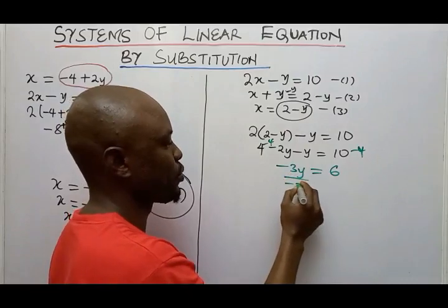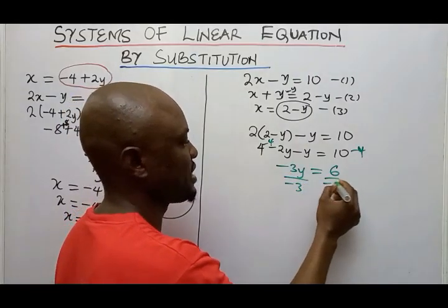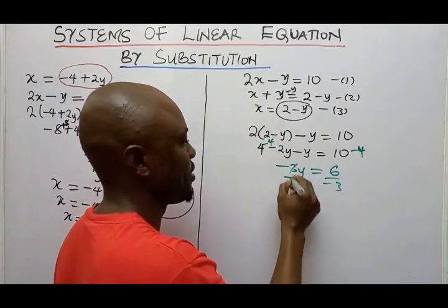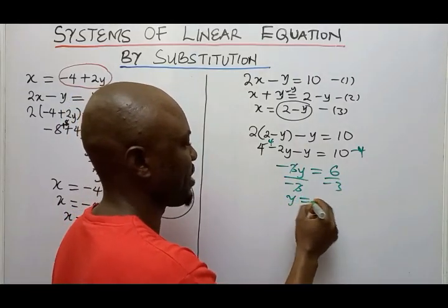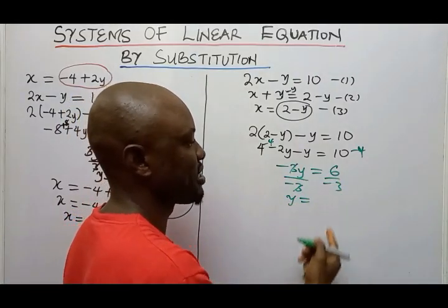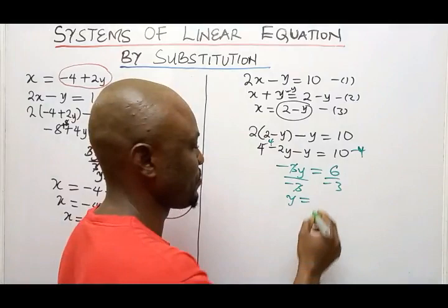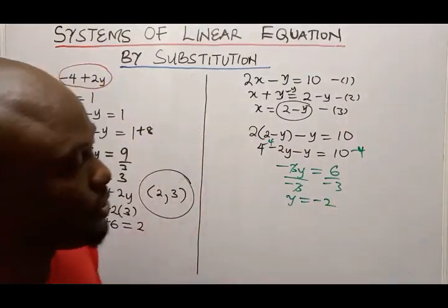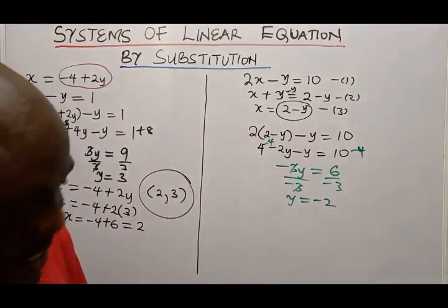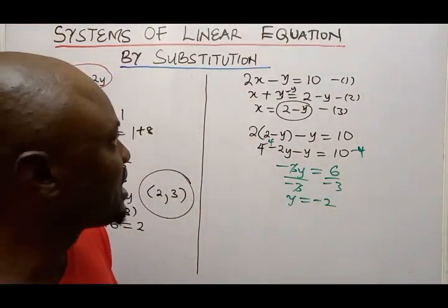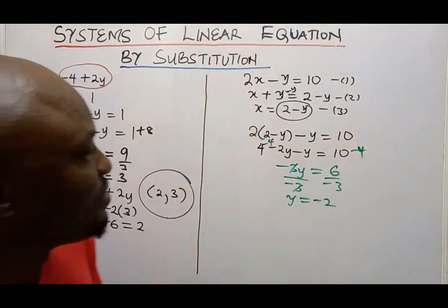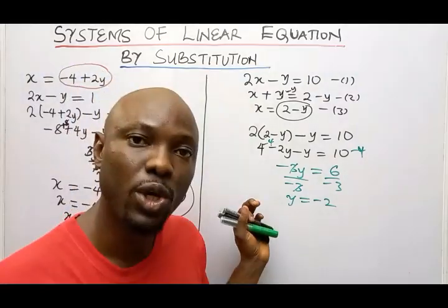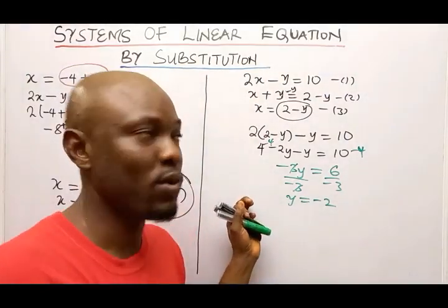If I divide through by negative 3, my Y value will be 6 divided by negative 3, which gives me negative 2. Now I want to get the value of X.